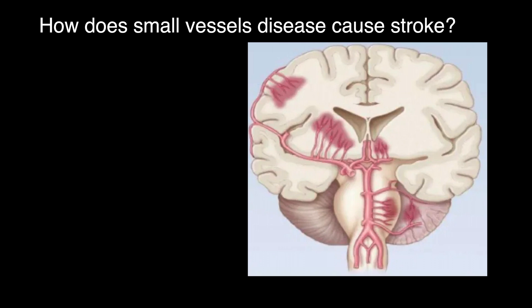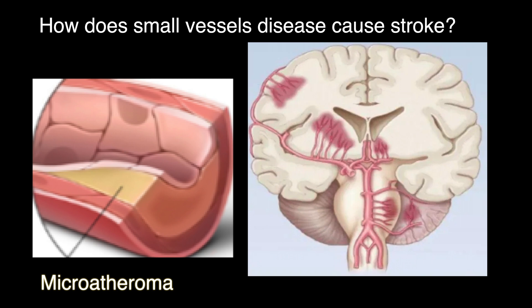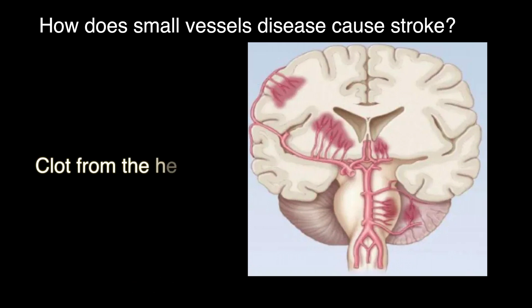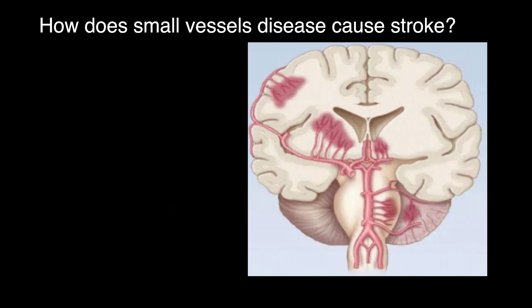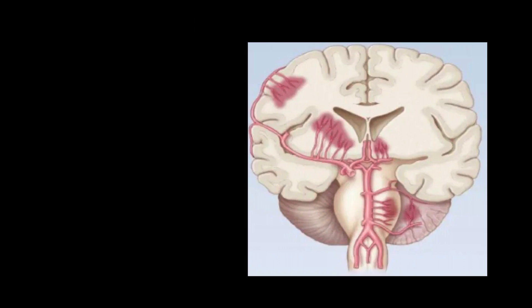Another cause of small vessel stroke is called microatheroma, which really means plaque formation but within the small vessels. Another cause is a small clot that comes from the heart or a large vessel, which can cause occlusion in this area, leading to small vessel stroke — but in this case we have to consider an embolic source.